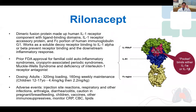Moving on to Rilonacept, which is a dimeric fusion protein made up of IL-1 receptor antagonists and multiple immunoglobulin components. Rilonacept acts as a decoy soluble receptor binding to IL-1 alpha or beta to prevent receptor binding and dampen the downstream inflammatory response.